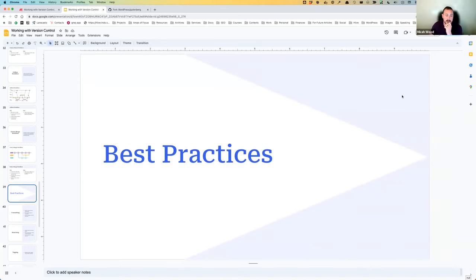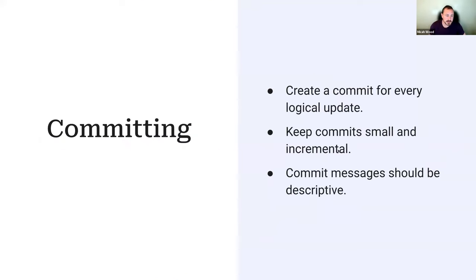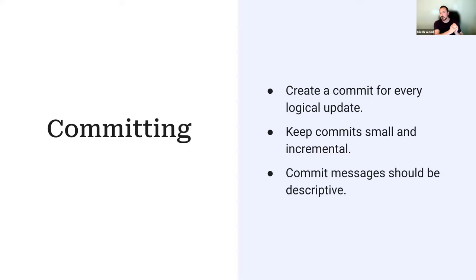We're almost out of time but here are some best practices. When committing, make sure each commit makes logical sense — don't mash random changes together, keep them separate and logical. Keep commits small and incremental. If you make big changes without committing frequently you'll break things and won't be able to figure out why. Make commit messages descriptive — don't just say 'test' or 'updated', say what you actually changed.